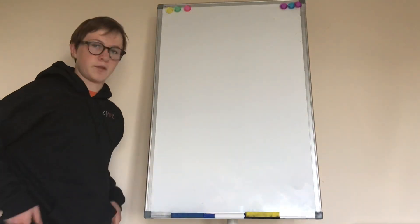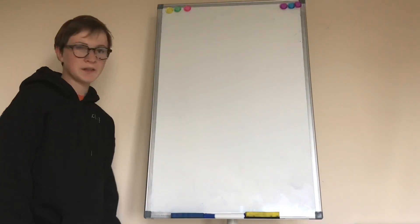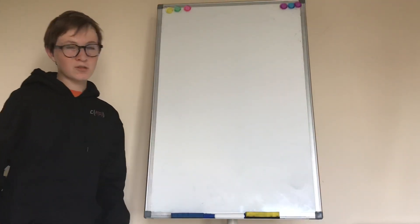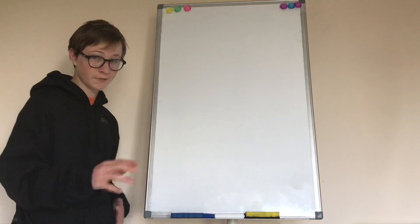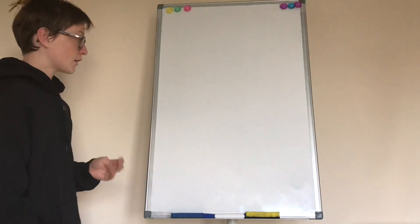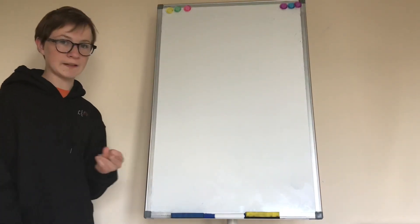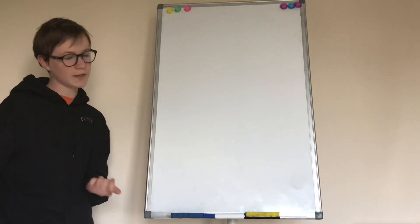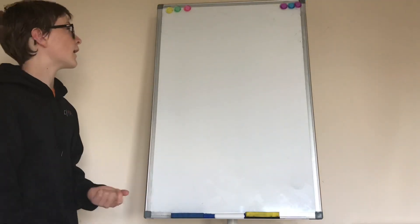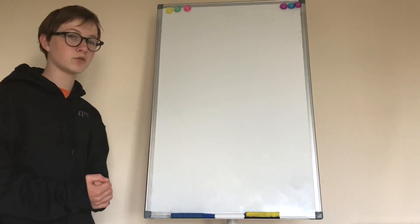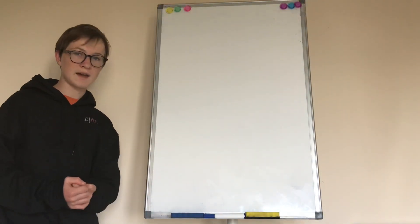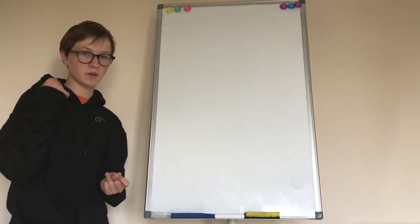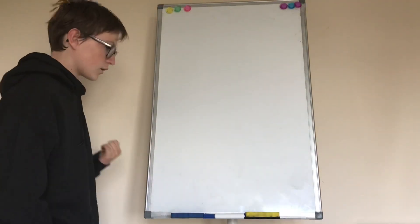Hello everybody, welcome back to another Gory Smart video. In this video we're going to be looking at just the category theory we need to know in order to understand the van Kampen theorem. I'm going to assume you know what a category and a functor is, and we're going to introduce the fundamental groupoid and co-limits and limits of functors.